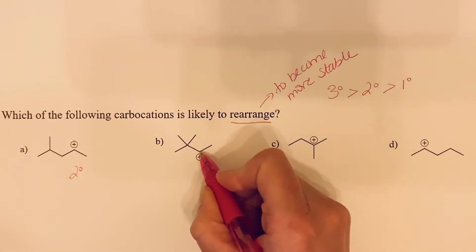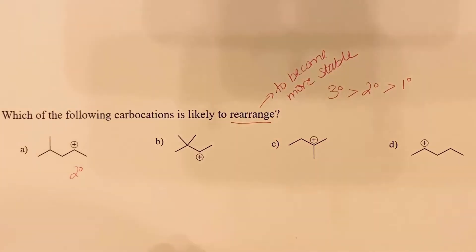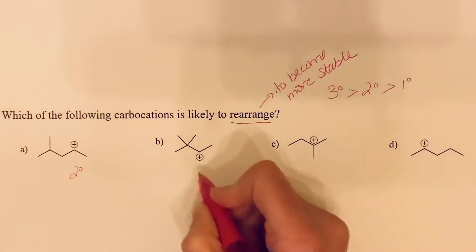Looking at the second one, we see also two bonds, one, two, to other carbon atoms, so this is also a secondary carbocation.